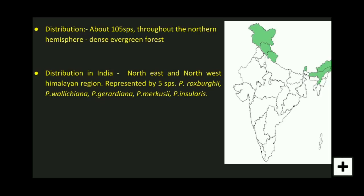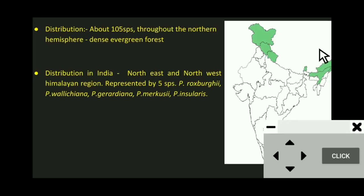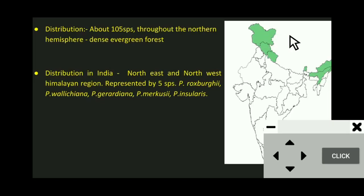In some textbooks five to six species are mentioned, so it is about five species. These are found mainly in the northeast and northwest Himalayas. The northwest Himalayas include Jammu & Kashmir, Ladakh, and Himachal Pradesh. The northeast Himalayas are present in Arunachal Pradesh, Sikkim, Mizoram, and Nagaland. This is about the distribution.